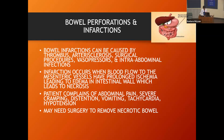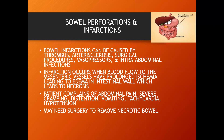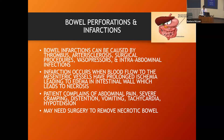Bowel infarctions and perforations often require surgery. If there's a thrombus, they have to go in and remove it and open the abdomen. When the patient comes back from surgery, you may have a JP drain or a Penrose drain. They would sometimes have the abdomen partially open with wound packing so the bowel can heal from the inside out.